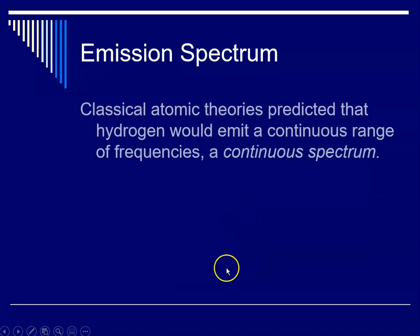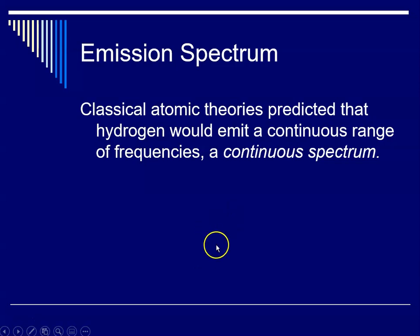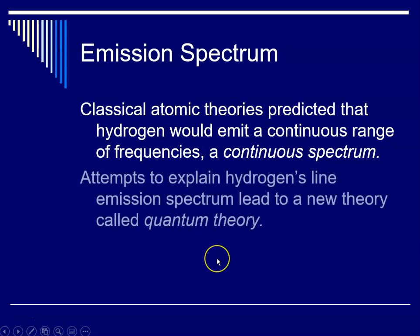So classical atomic theories predicted that hydrogen should emit that continuous range of frequencies, the continuous spectrum that I showed you in the previous slide. But instead, there were just these very discrete single lines, and attempts to explain it led to the new theory, which is called the quantum theory, and that's our current theory of atoms.